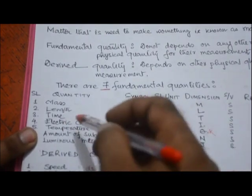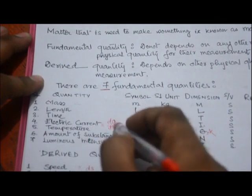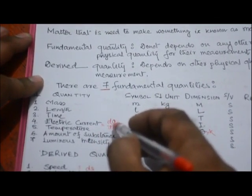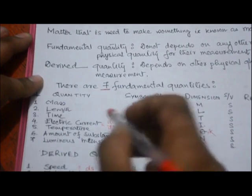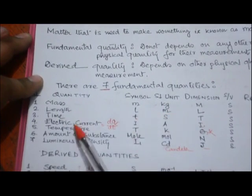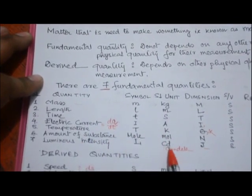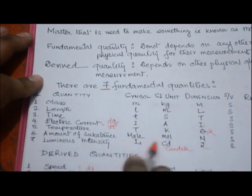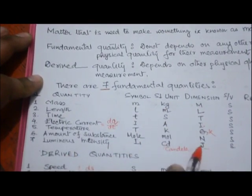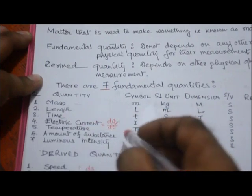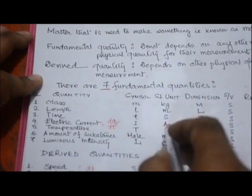Note that electric current — which is the rate of change of electric charge — is the fundamental quantity, not the charge. The units are: mass in kg, length in meter, time in second, electric current in ampere, temperature in kelvin. Amount of substance is mole, and luminous intensity is candela, denoted by J with symbol L. Remember: charge is coulomb, current is ampere.